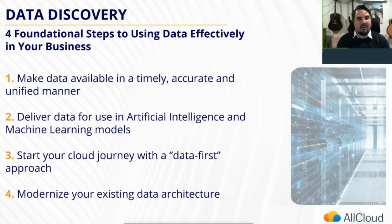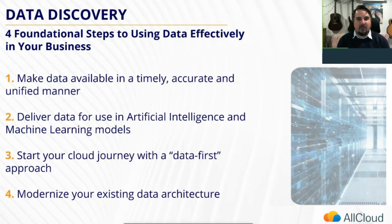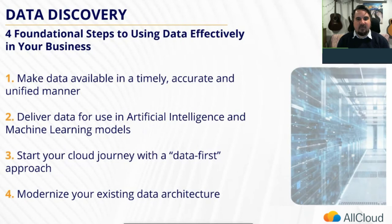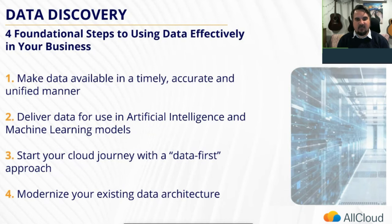Finally, number four: modernize your existing data architecture. Even if your data is already in the cloud, there are typically improvements you can make to further modernize your data architecture, such as increasing availability and elasticity, reducing capital investments by engaging with a managed services partner, introducing more durable and automated backups that align with your company's RPO and RTO requirements, and enhanced security and access controls that are consistent across your cloud and data ecosystem.